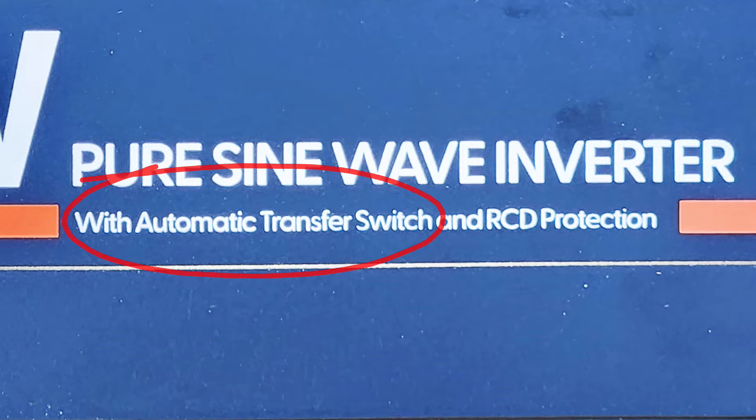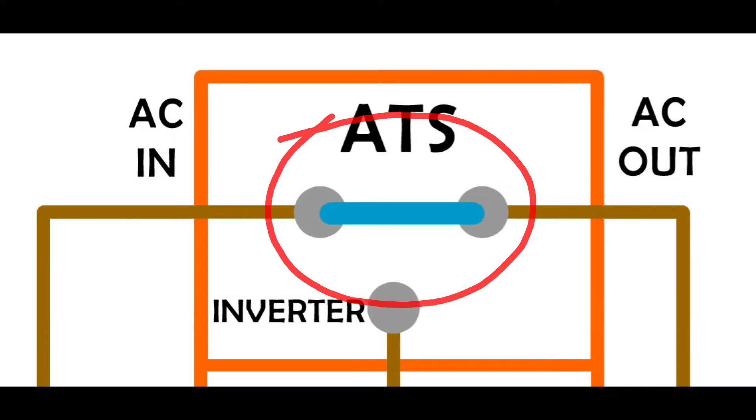Some inverters come with an automatic transfer switch, but what is it? It's just a switch that automatically connects your appliances to either mains power or power from your inverter.